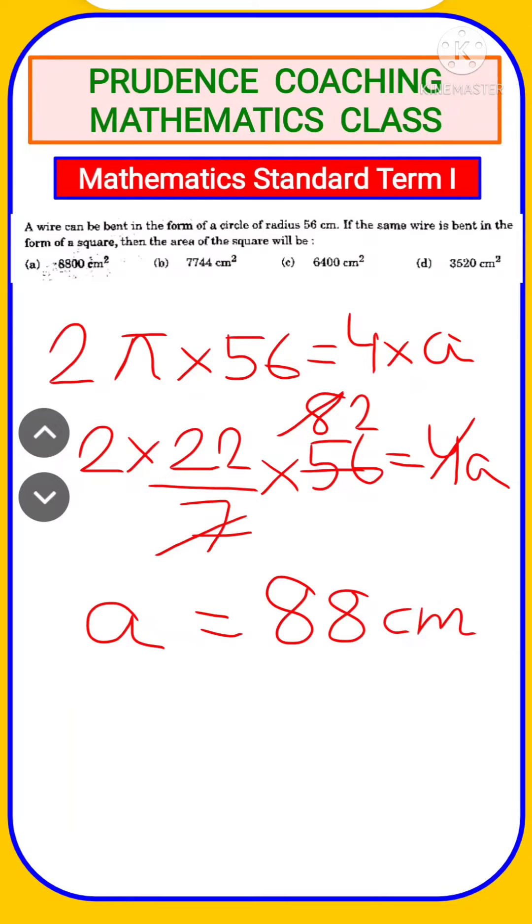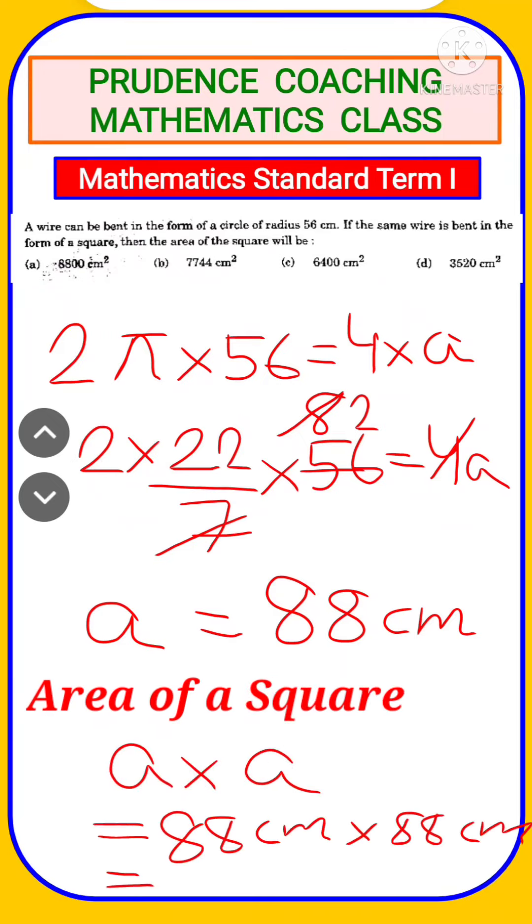The area of the square will be side × side, which equals 7744 cm². When calculating 88 × 88, you get 7744. Since only one option has 4 in the unit place, that confirms our answer.